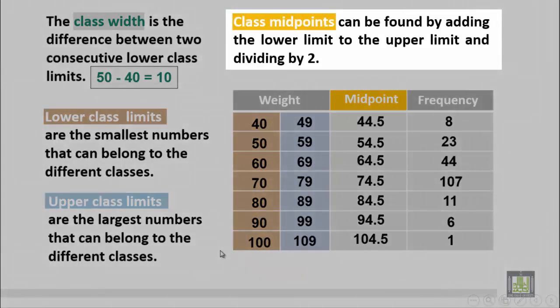The class midpoints can be found by adding the lower limit to the upper limit and dividing by two.